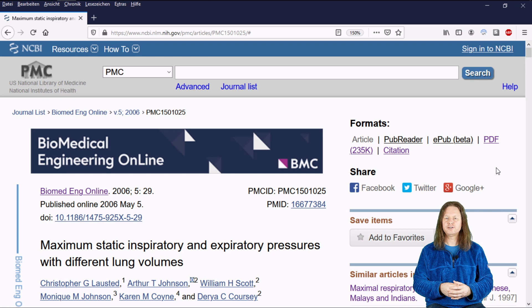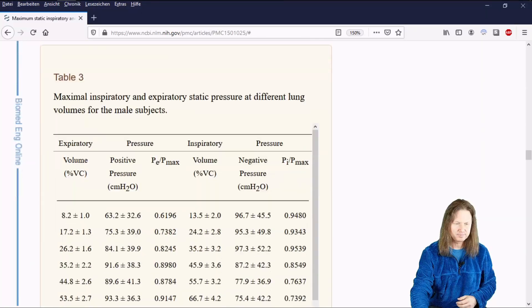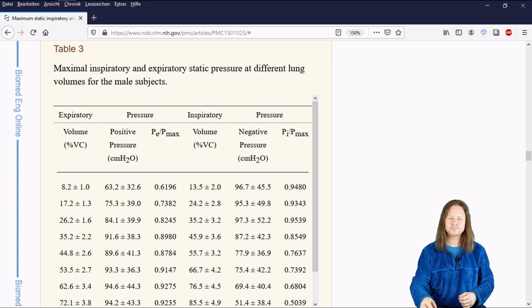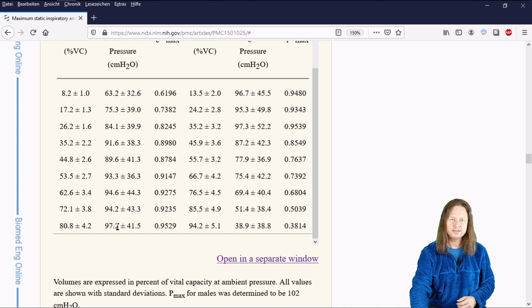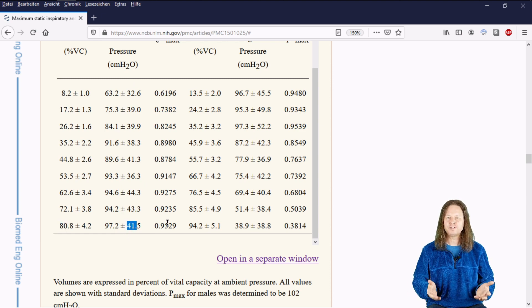In the journal Biomedical Engineering Online we find a paper entitled maximum static inspiratory and expiratory pressures with different lung volumes. The paper contains a table number 3 that shows the maximal inspiratory and expiratory static pressures at different lung volumes for male subjects. So that would apply to me. If we look into the last row of the table we find the exhalation pressure at 80 percent used lung volume to be about 97.2 centimeters water column on average plus minus a standard deviation of 41.5 centimeters water column.